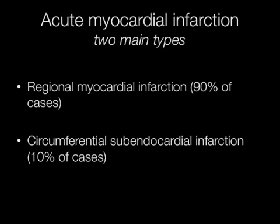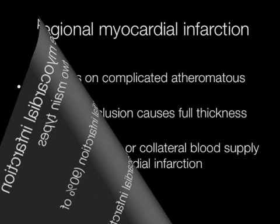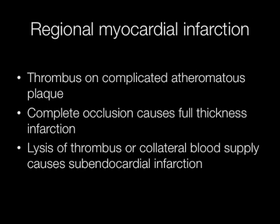There are two main types of acute myocardial infarction: regional myocardial infarction and circumferential subendocardial myocardial infarction. In regional myocardial infarction, thrombus develops on a complicated atheromatous plaque in the coronary artery. There may be complete occlusion causing full thickness infarction, or lysis of the thrombus may occur, or a collateral blood supply may develop causing subendocardial infarction.